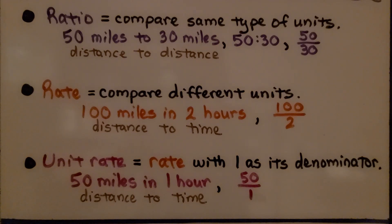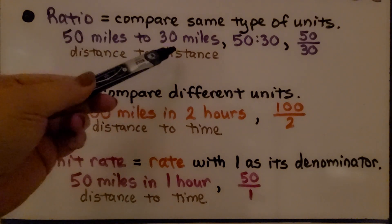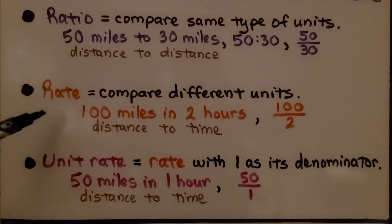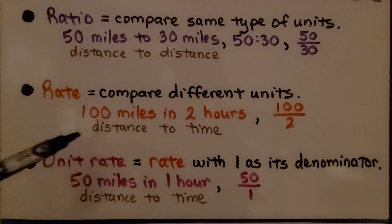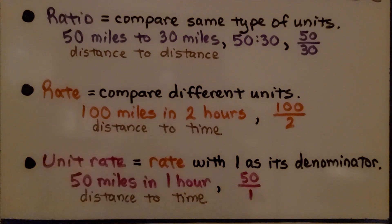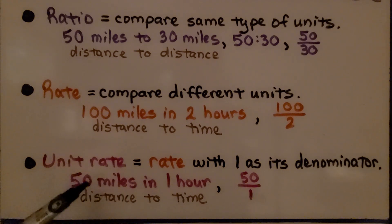A ratio is when we compare the same type of units, like miles to miles — it's distance to distance. A rate is when we compare different units, like distance to time for miles and hours. And a unit rate is a rate that has a 1 as its denominator, like 50 miles in 1 hour.